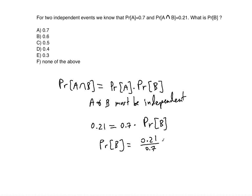And that's the same thing as 21 divided by 70. If you reduce that by 7 you will get 3 over 10. And that is equal to 0.3. So answer choice E.